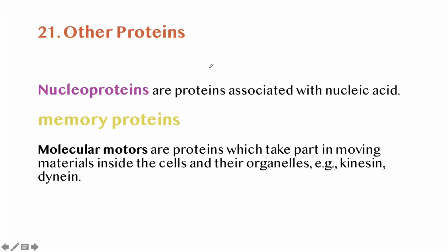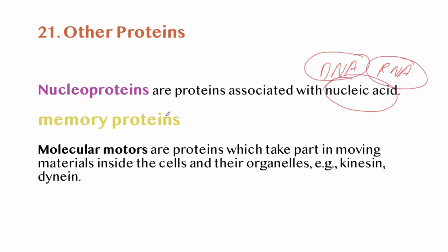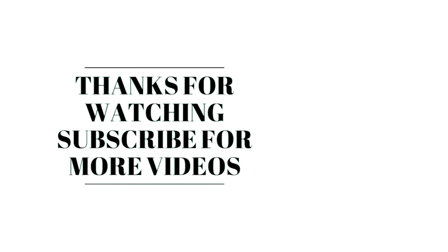Other proteins include nucleoproteins, which are associated with nucleic acids DNA or RNA. Human memory is believed to be stored in specific proteins known as memory proteins. Proteins, being multivalent macromolecules, can carry out a number of chemical reactions. Molecular motors are proteins which take part in moving materials inside the cell and their organelles. This was all about proteins — please subscribe to the channel for more videos.